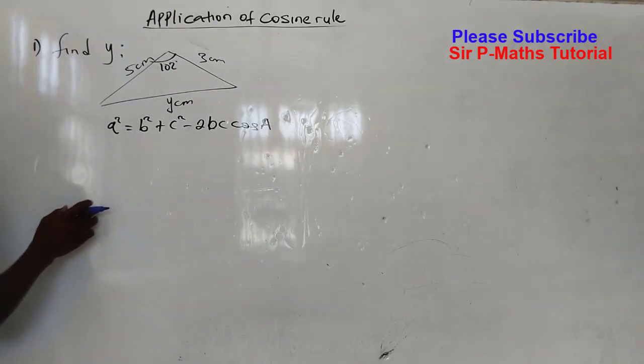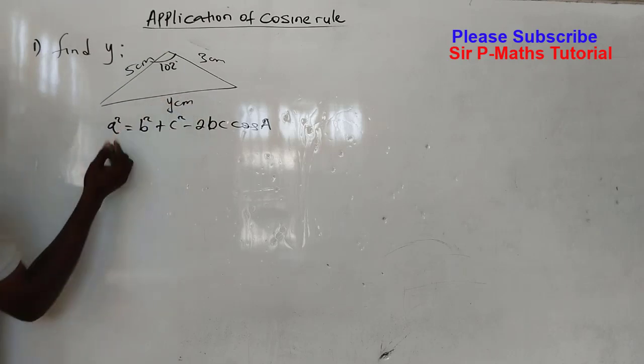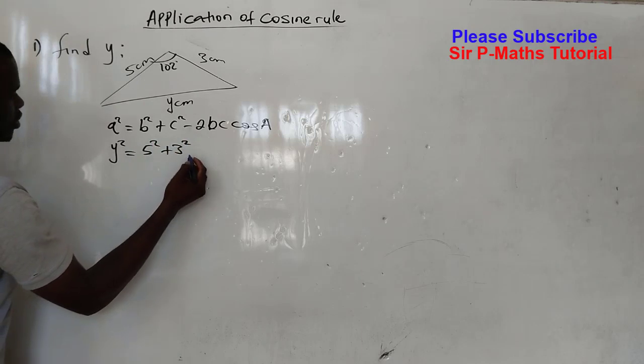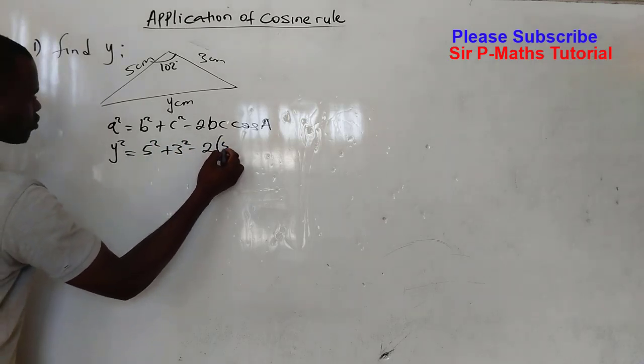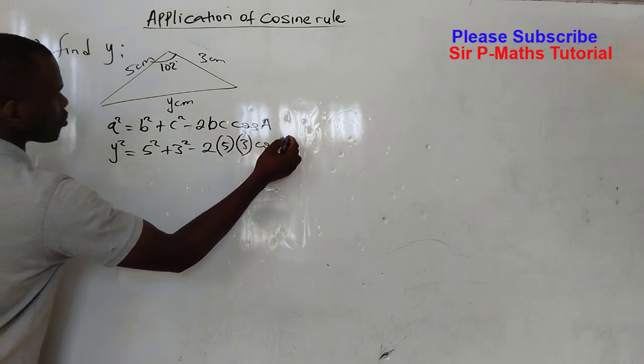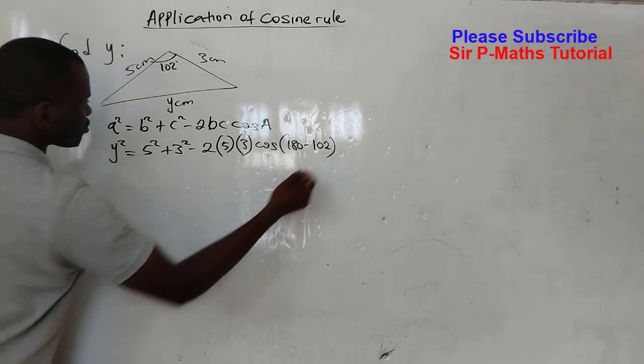Then we apply the parameters we have here. We are looking for y, so what comes here equals 5² + 3² - 2 × 5 × 3 cos(180 - 102). Now the reason is because 102 is obtuse—it has exceeded 90 degrees, therefore has entered the second quadrant.